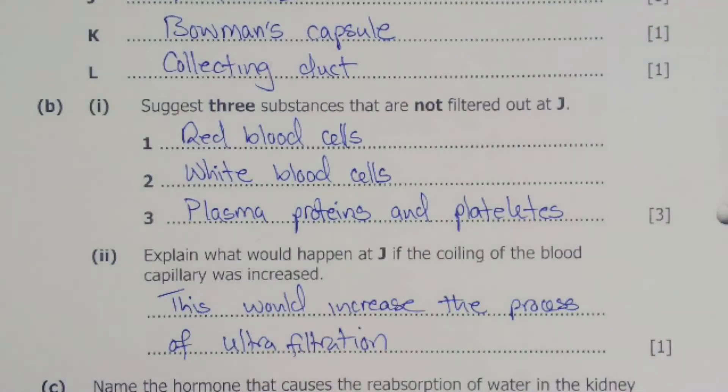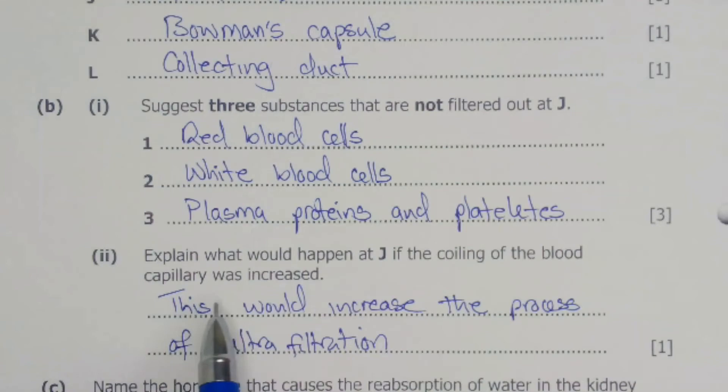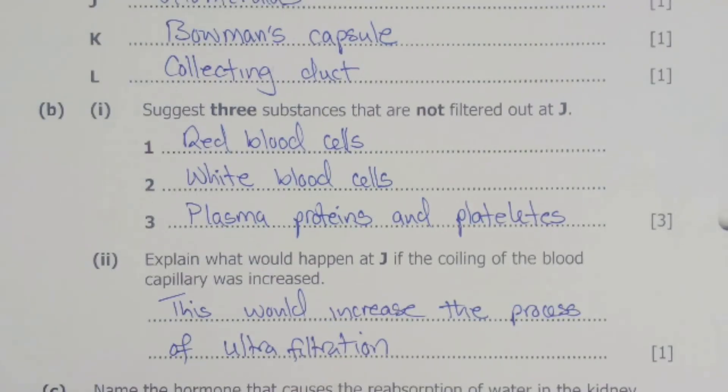Basically, just increasing the coiling of the blood vessels or blood capillary would increase the process of ultrafiltration. So more ultrafiltration will take place. That was the solution to question number B2. The next part of the question is C, which was the last part of question number three.